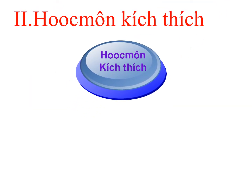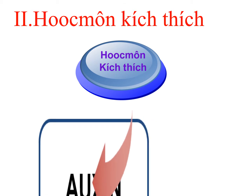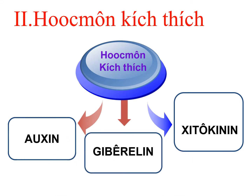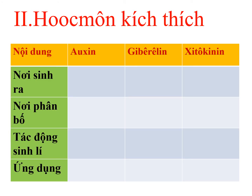Nhóm hốc môn kích thích sinh trưởng gồm có: thứ nhất là auxin, thứ hai là cytokinin, và thứ ba là gibberellin. Với 3 loại hốc môn kích thích này, các em cần lưu ý một số nội dung sau: thứ nhất - mỗi loại hốc môn được sinh ra ở đâu; thứ hai - nó được phân bố ở nơi nào trong cơ thể; thứ ba - tác động sinh lý như thế nào; và thứ tư - ứng dụng của những loại hốc môn này trong đời sống.